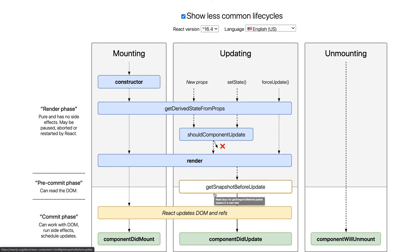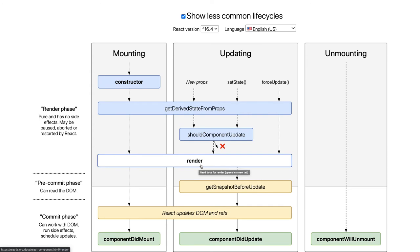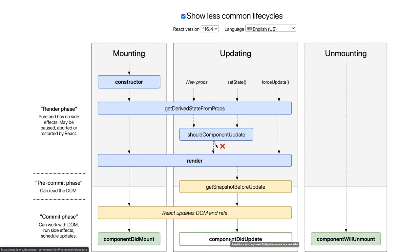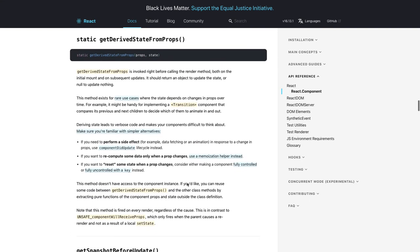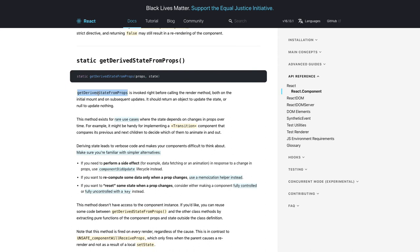We talked about how getSnapshotBeforeUpdate is used — it lets you read the DOM state based on the new and previous props and state before changes are applied. You can check the UI snapshot to decide if any action is needed to accommodate an upcoming change. This snapshot is then passed to the componentDidUpdate method. You can find more detail in the description.